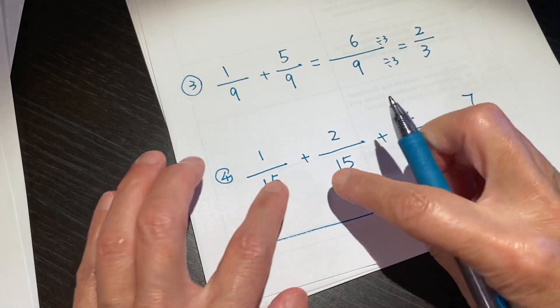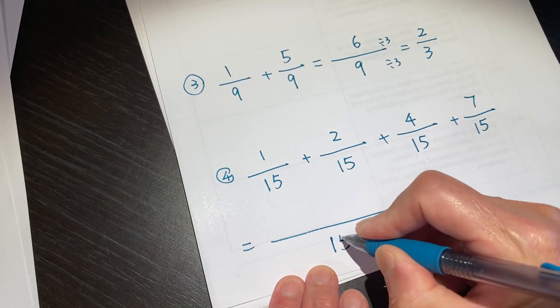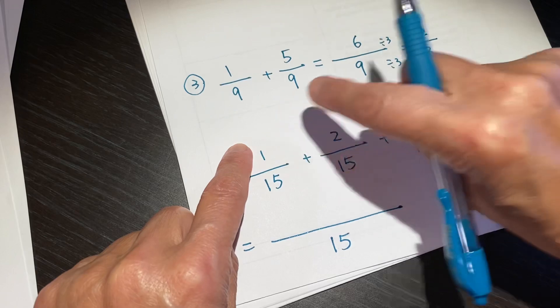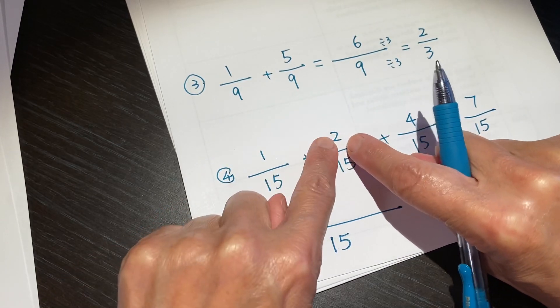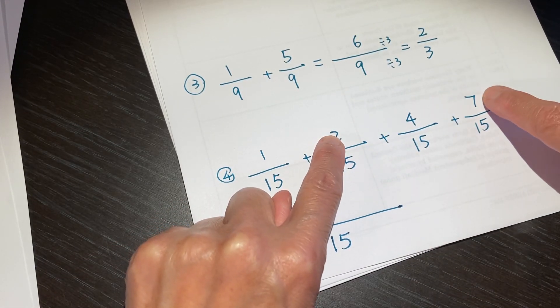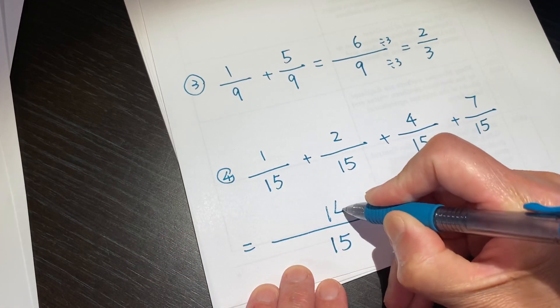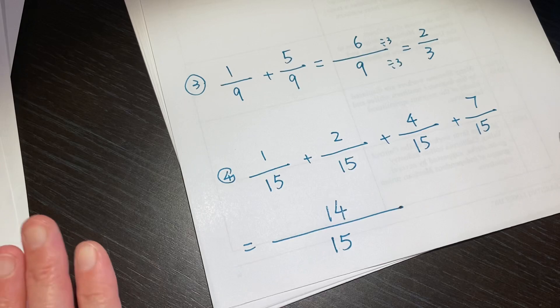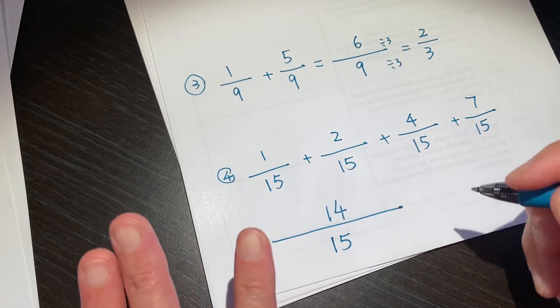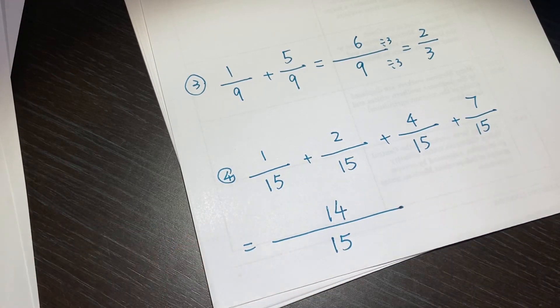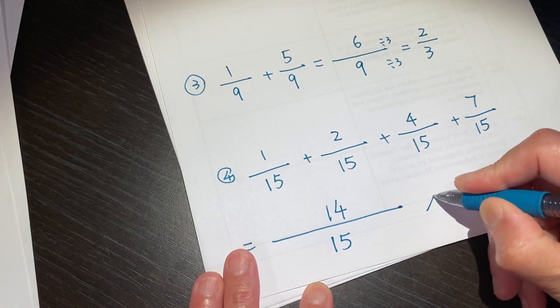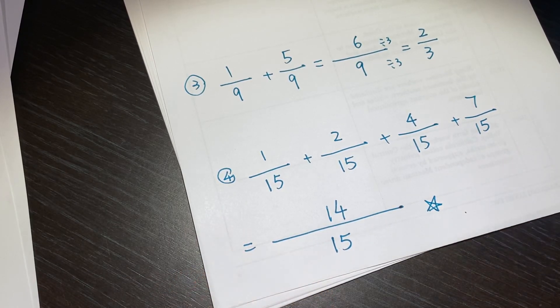So the bottom is 15. We do not change. 1 plus 2, 3. 3 plus 7 is 10. 10 plus 4 is 14. And no more way to simplify it any further. No reduction needed. This is our answer.